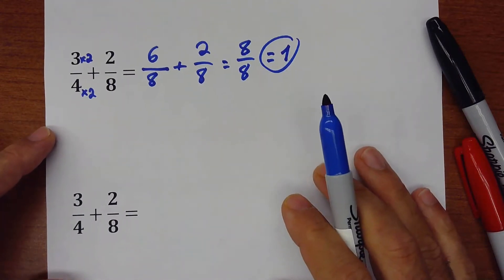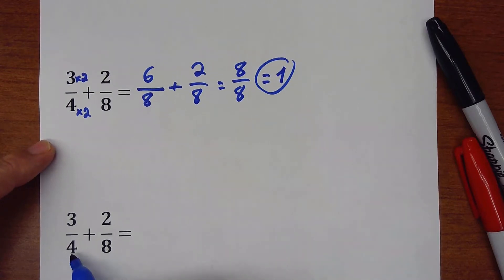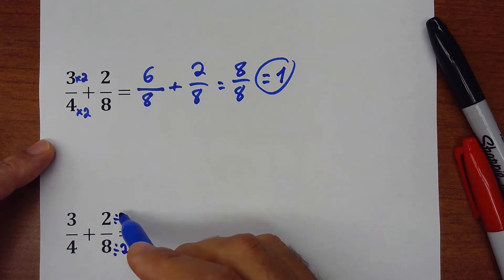Now let's do it again, but in this case, instead of 4 times 2 to get 8, let's divide 8 divided by 2, so I have to also divide 2 divided by 2.